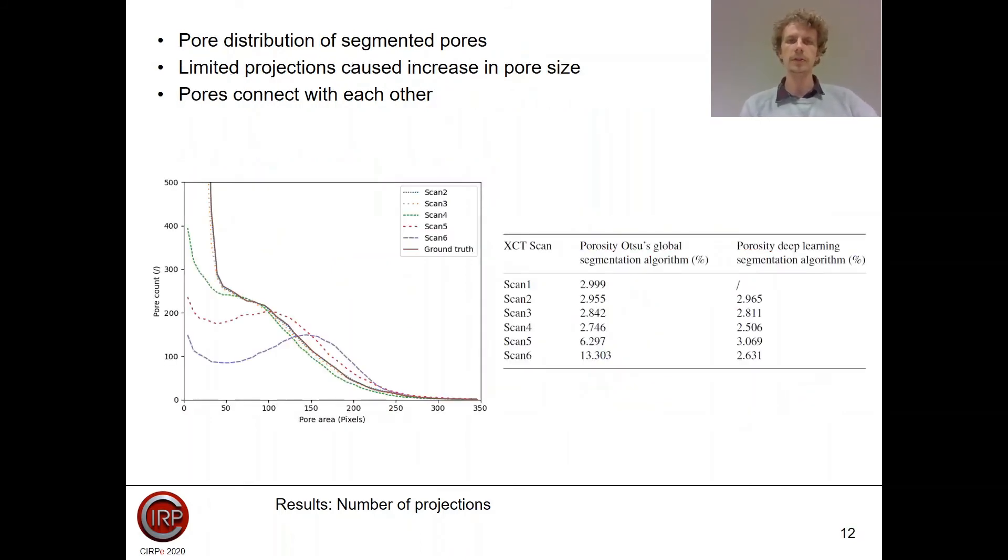If we take a closer look at the pore distribution, we see that in scan 5 and scan 6, pores tend to become larger. This is caused by pores that start to connect with each other due to the high angular rotation during the acquisition of one radiograph. If we take a look at the porosity values of deep learning segmentation, we see that from scan 2 to scan 4, there is a decrease in the porosity, which is caused by less detected smaller pores. But if we take a look at scan 5 and scan 6, there is again an increase, and this is caused by the larger pores due to the pores that start to connect with each other.